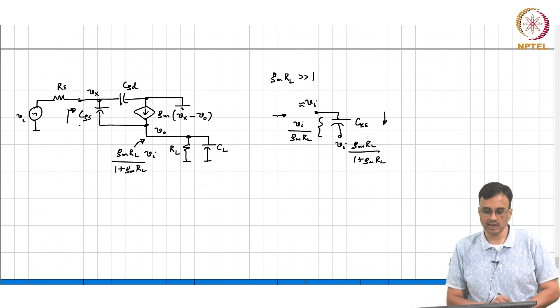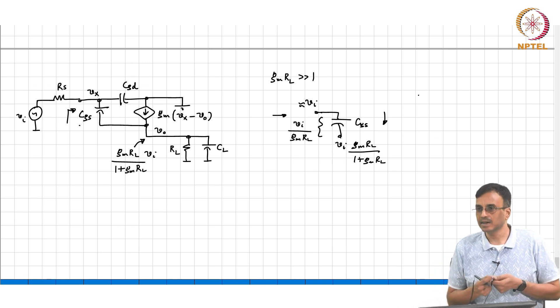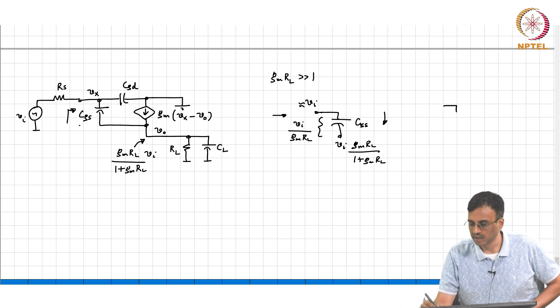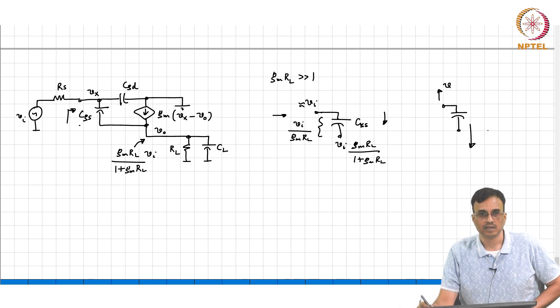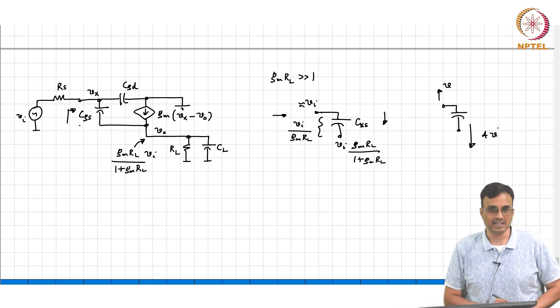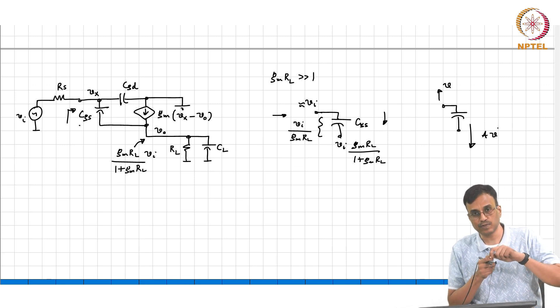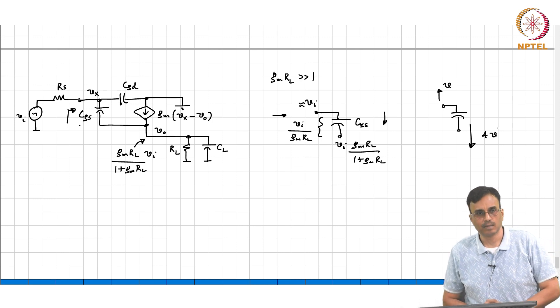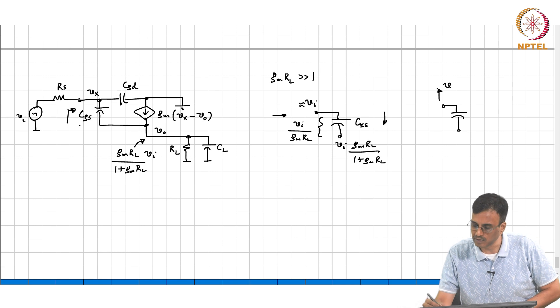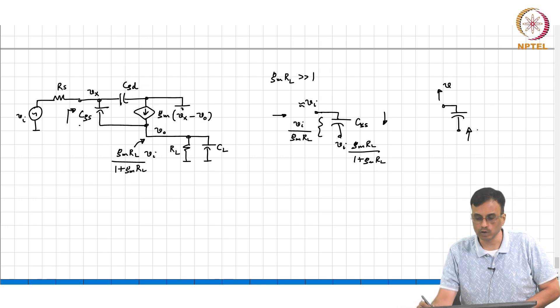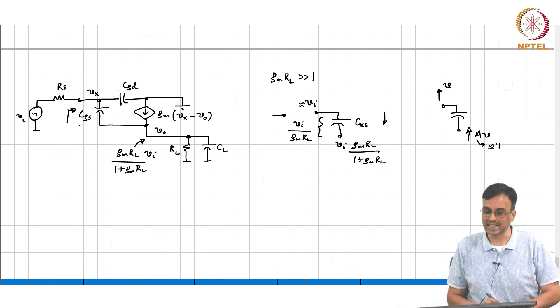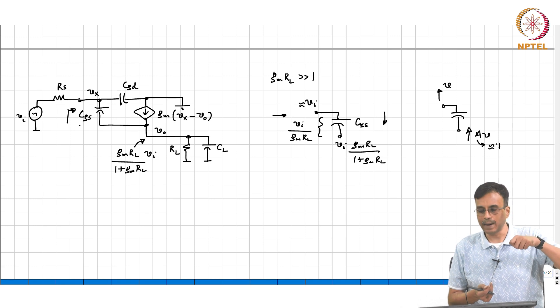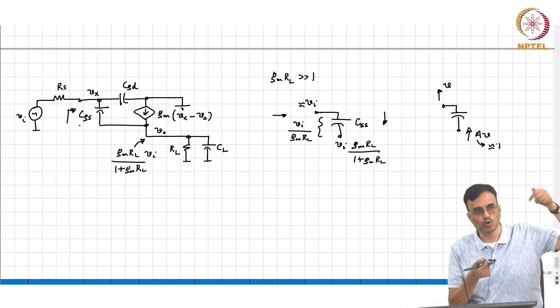So basically you can see that this is also like Miller effect except that the gain is 1. In the common source amplifier, if this voltage went up by V, this voltage is a large number. Therefore the CGD appeared as if it was multiplied by 1 plus A. Now what is happening? This voltage goes up by V, this voltage is going up also by A*V, but where A is approximately 1.